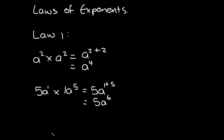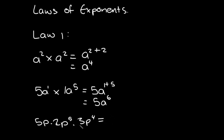One more example of Law 1: we have 5p times 2p to the power of five times 3p to the power of four. The dots in between mean we are multiplying the terms. So five times two times three gives us 30. Now for p, there's an invisible one, so one plus five is six, plus four is ten. The final answer is 30p to the power of ten.